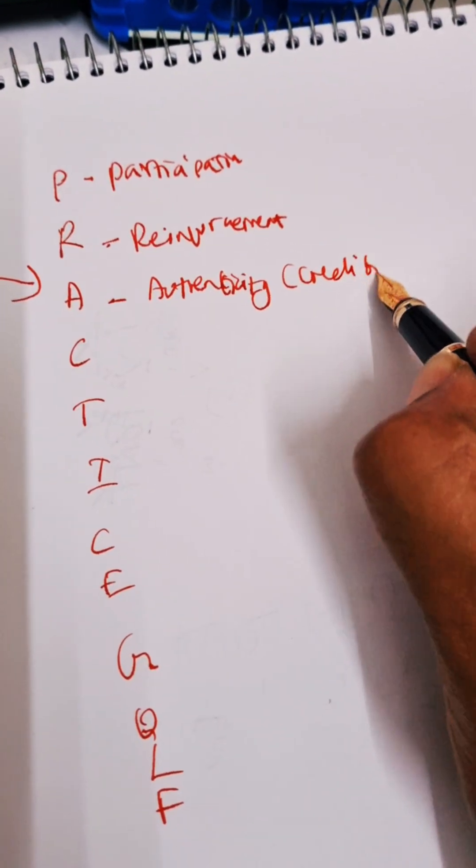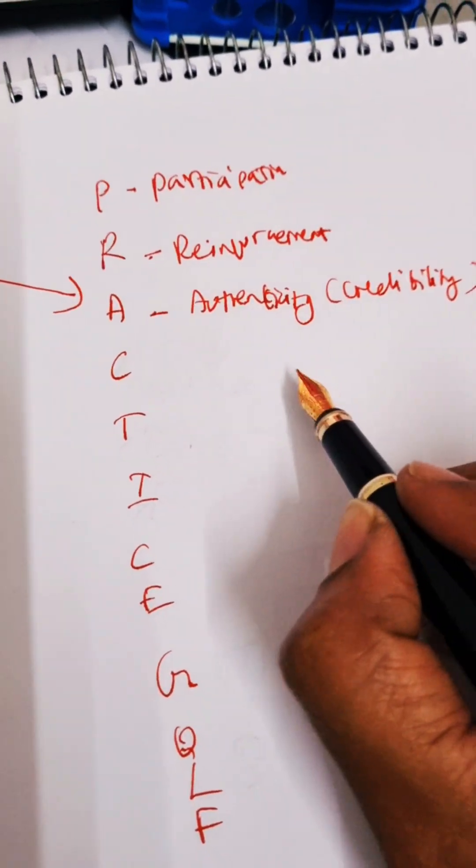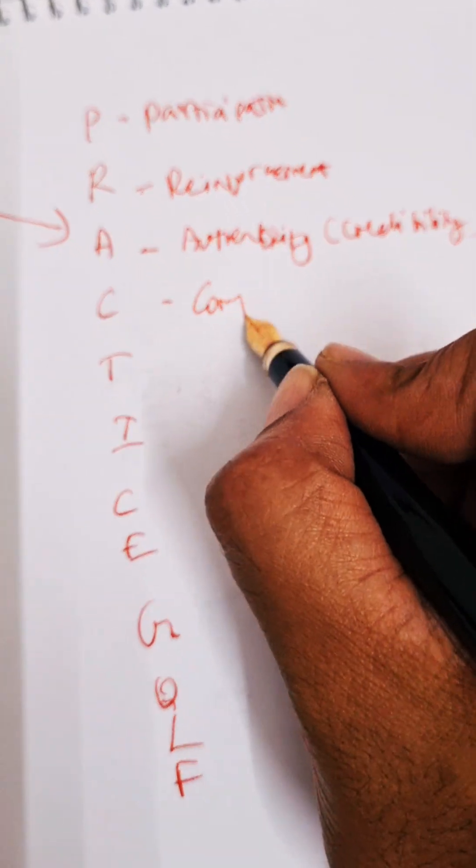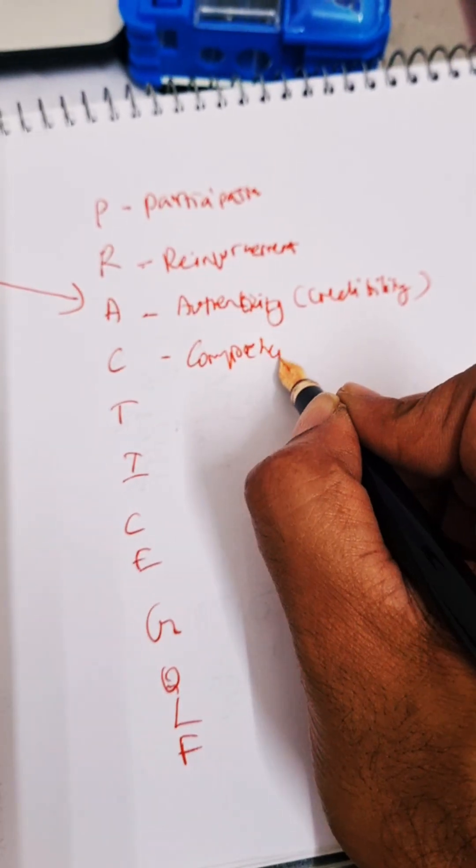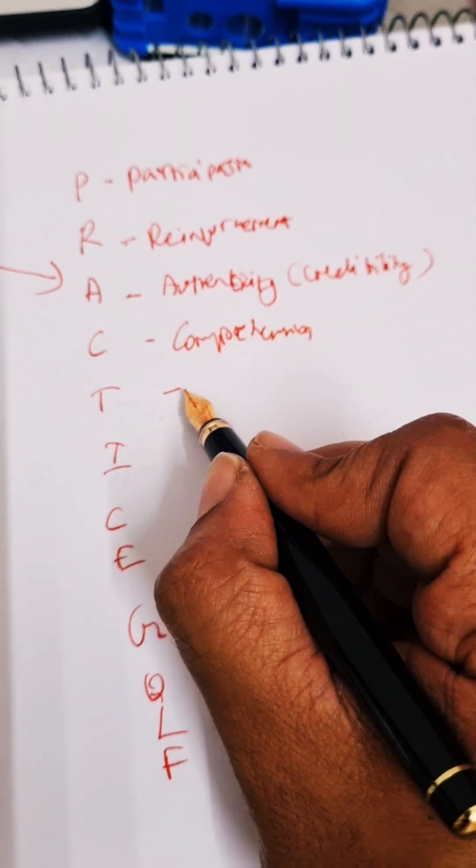Fourth one is comprehension. It is directly there, comprehension. It should be understandable. The health education message should be understandable.